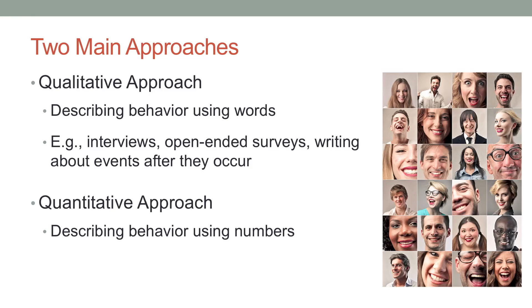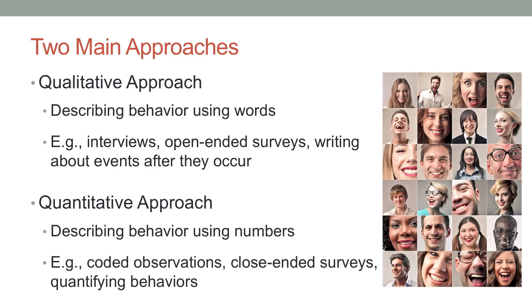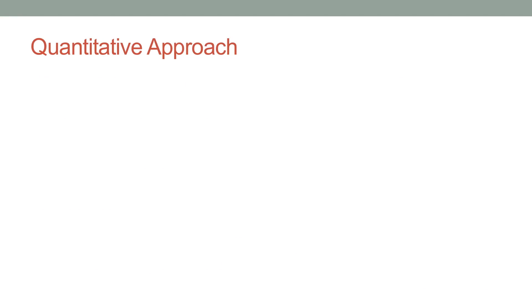This is different from the quantitative approach, in which you're quantifying behaviors using numbers, and this usually necessitates coding observations. You can't just simply write about behaviors — you have to come up with some coding scheme that turns behaviors, emotions, or cognitions into something measurable, something using numbers. Throughout most of this class, we're going to be taking the quantitative approach, because that has a lot of benefits, such as being able to test hypotheses.